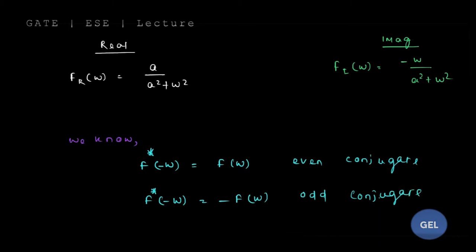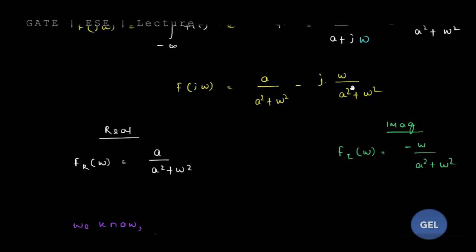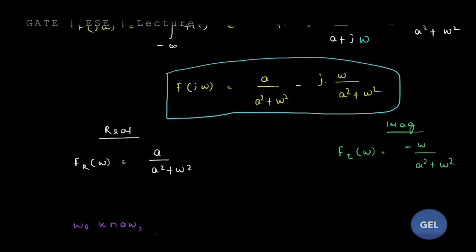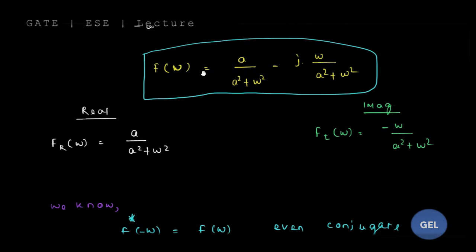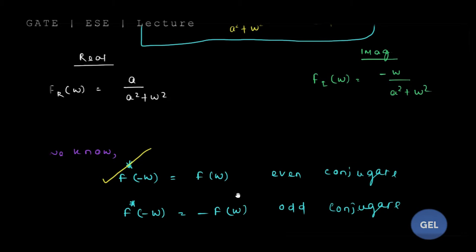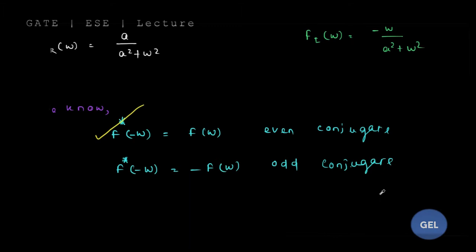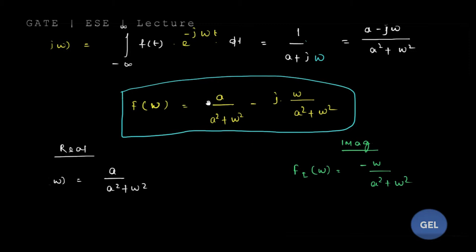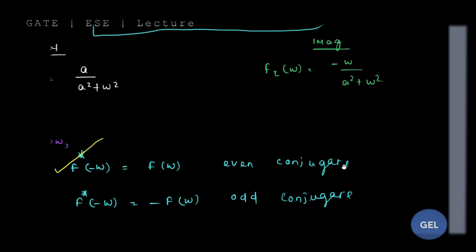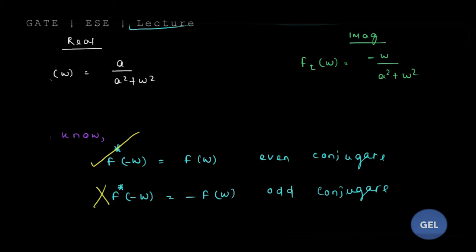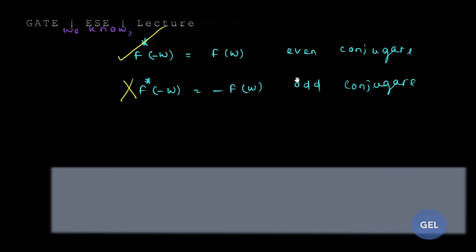Now I want you to test whether your F(ω) satisfies these conditions. If you test F(ω) = 1/(a + jω), this function satisfies the even conjugate condition. So this F(ω) is your even conjugate — also called conjugate symmetry. This is not an odd conjugate; it is an even conjugate. This is where the important concept begins, so listen carefully.